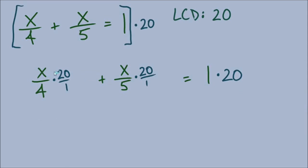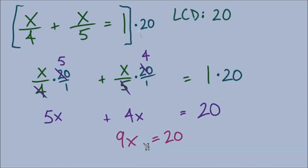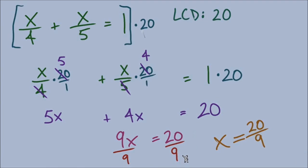This strategy is to cancel our denominators. In the first term, 20 over 4 divides evenly and leaves 5, so we get 5x. In the next fraction, 20 over 5 leaves 4, giving us 4x. On the right side, 1 times 20 equals 20. We now have a cleaner linear equation. Combining terms: 5x plus 4x gives 9x. Dividing both sides by 9 leaves x equals 20 over 9.